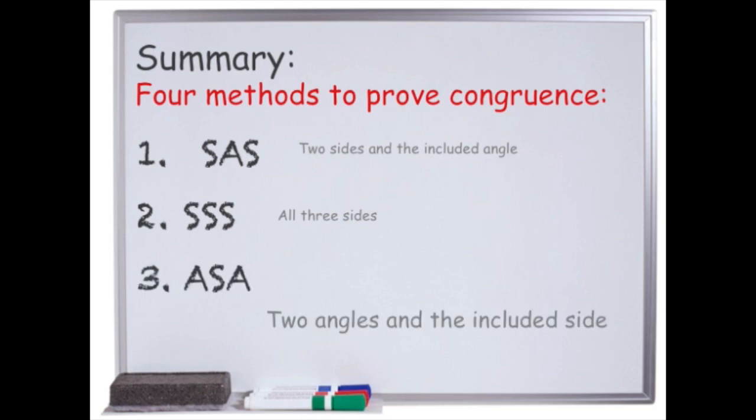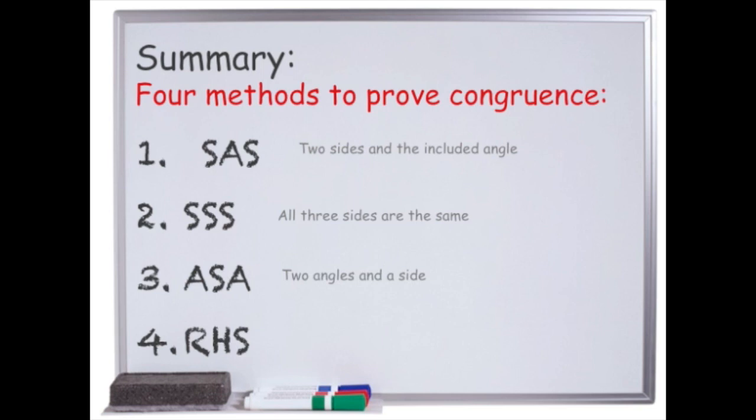Another way to tell that two triangles are the same is that they have two angles and the included side are the same. So angle side angle. The last way to tell if two triangles are the same is by them having a right angle, a hypotenuse and one other side the same. This is called RHS for short.